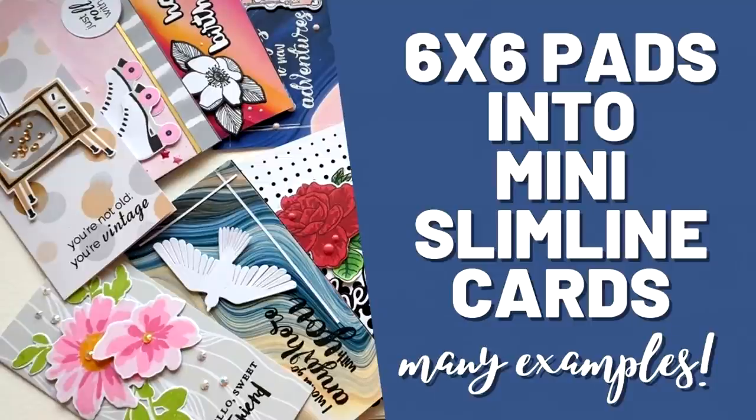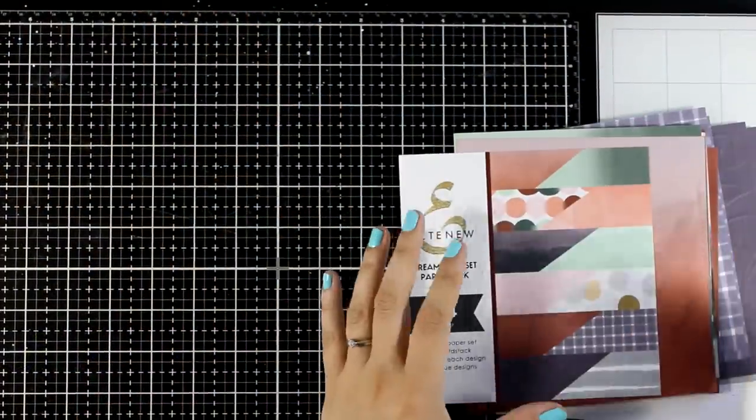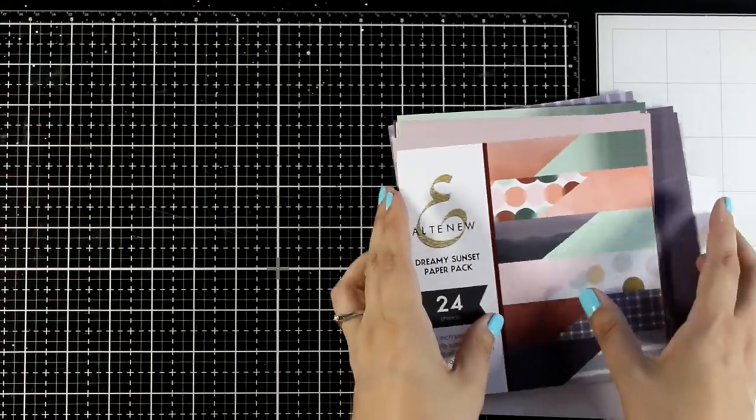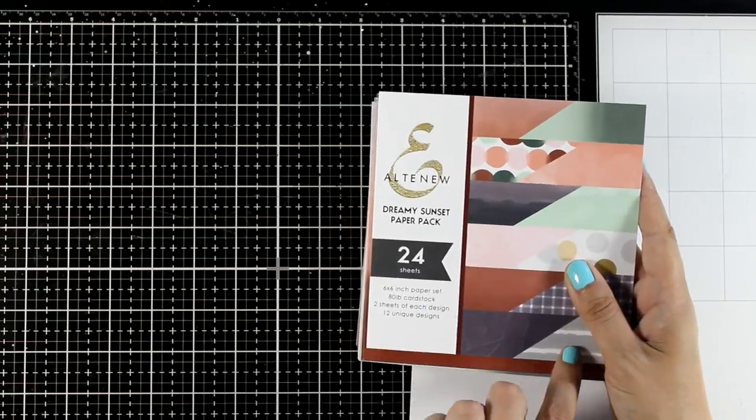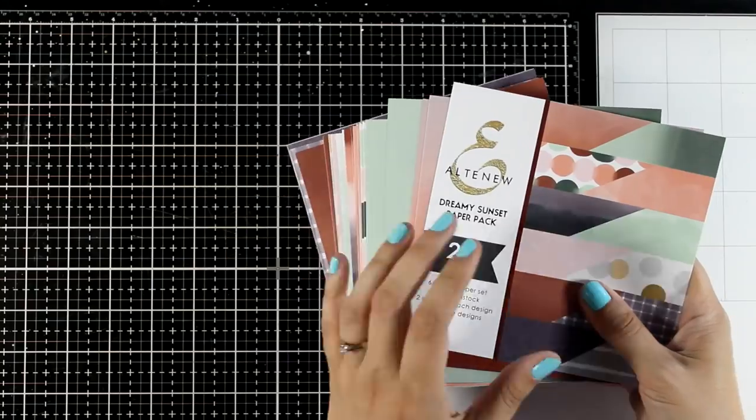Hello everyone and welcome back to another card making video. Today I have a great idea where I will be working with 6x6 paper pads to create mini slimline cards. This is a great way to use up all that paper that you have been hoarding, and if you just fold in half any 6x6 paper then you will end up with a mini slimline card.